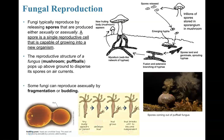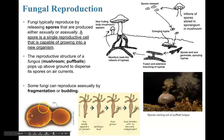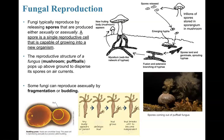In addition, some fungi can reproduce asexually by events called fragmentation or budding. Here I can see an example of a yeast that's budding. Remember, a yeast is a one-celled eukaryotic fungus, and that one cell is going to bud off of the parent.